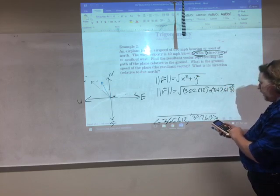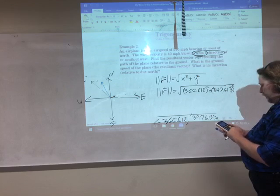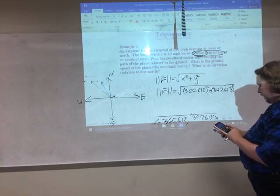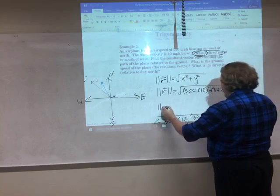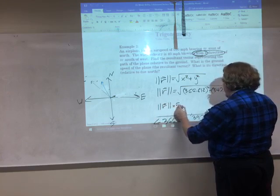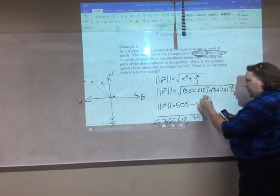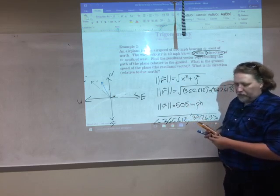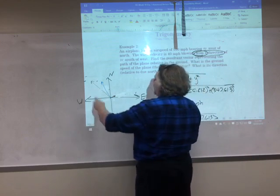To the calculator I go. 366.612 squared plus 347.613 squared. It gives me the overall result is 505 miles per hour. I went ahead and rounded to the nearest mile per hour. So, our overall result is 505 miles per hour.